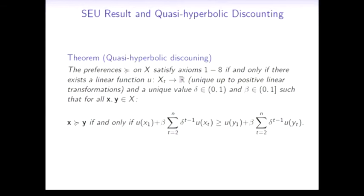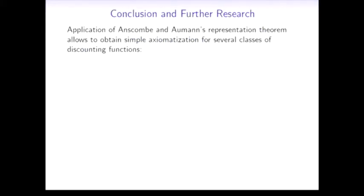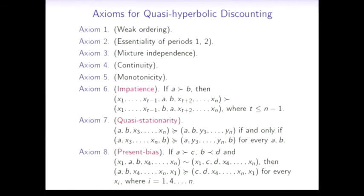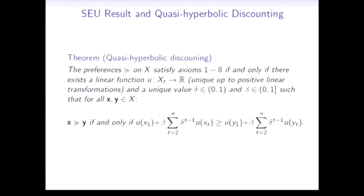Question: If you reverse your order on the last axiom, would you axiomatize something where beta is more than one? Well, yeah, I think so. As a matter of fact, this present bias condition is necessary in order to state that beta is in the interval from zero to one.